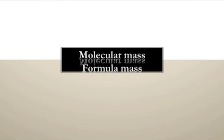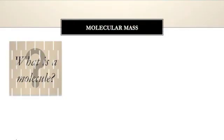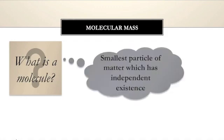In this video we are going to learn about two concepts: molecular mass and formula mass. Before we start with molecular mass, we need to know what is a molecule. A molecule is the smallest particle of matter which has independent existence, whereas an atom is the smallest particle which does not have any independent existence. So the independently existing smallest particle is the molecule.